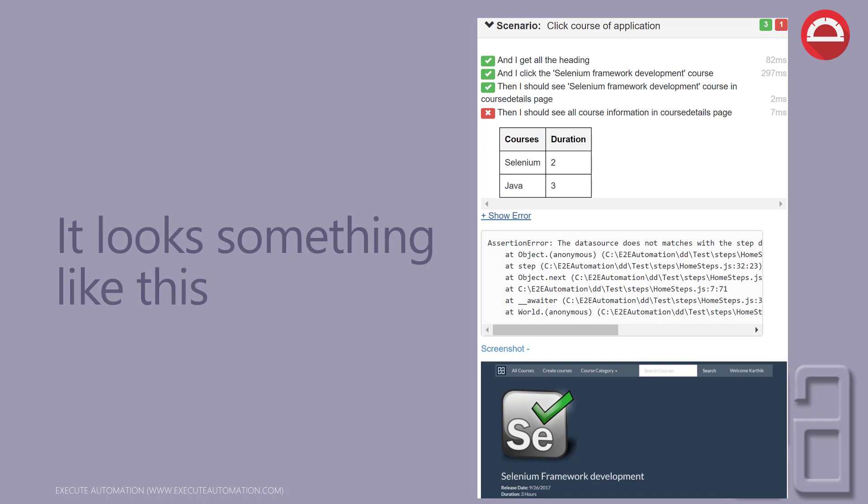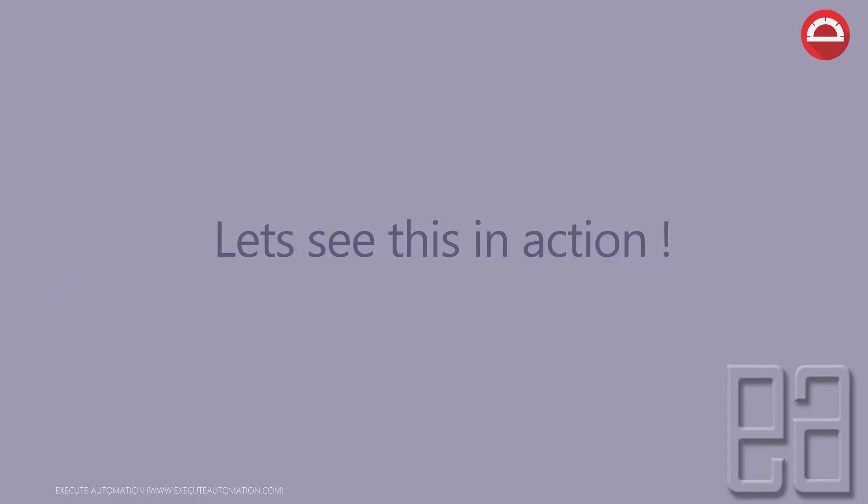It is going to look something like this: within a failed step definition in the Cucumber report, you can see a stack trace of what happened behind the scenes — the failure reason. It will also show a screenshot indicating why it failed, and you can see the EA course app screenshot available below within the report.